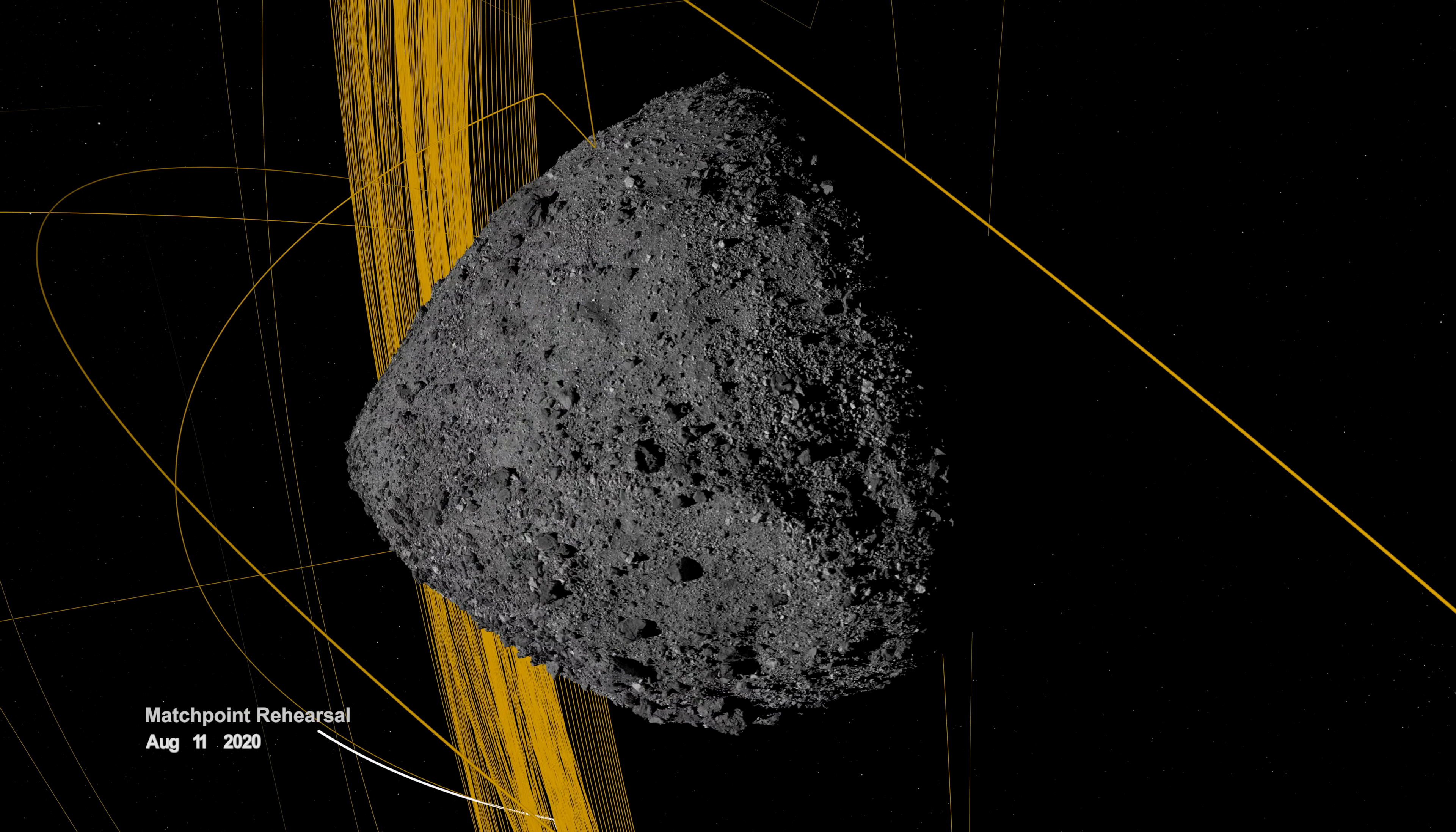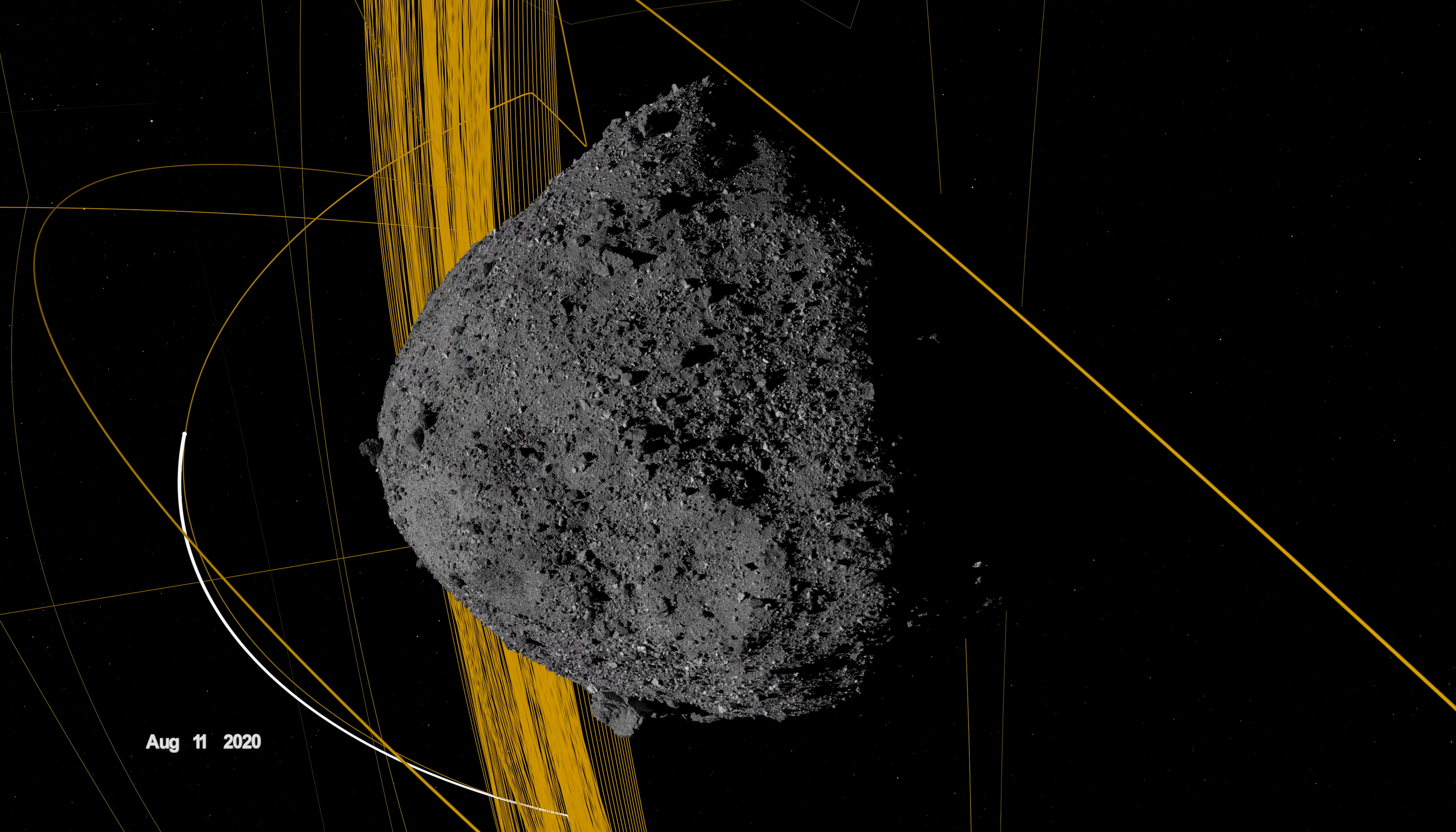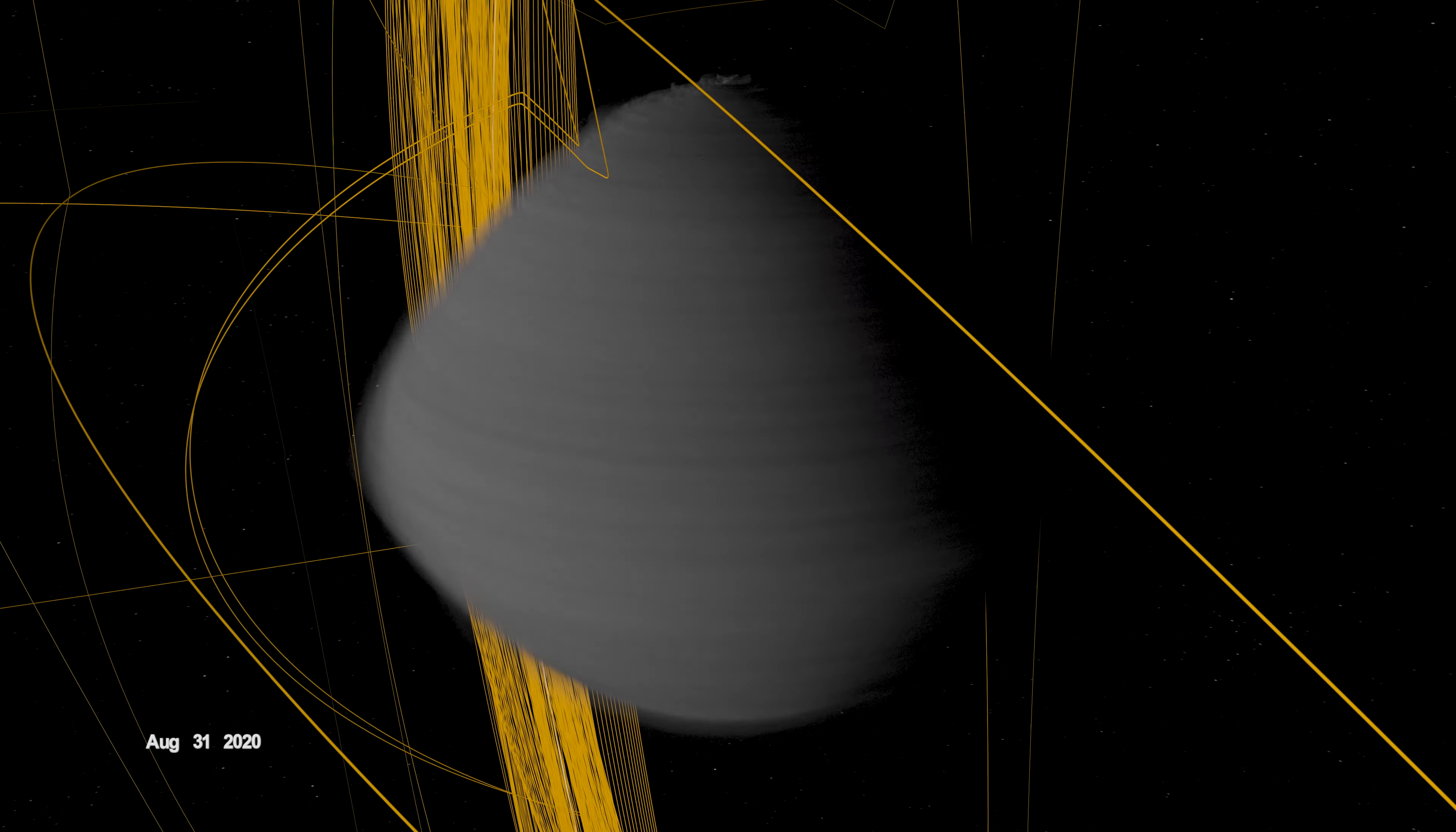On August 11th, OSIRIS-REx departed its home orbit and made a four-hour traverse to Bennu's northern hemisphere, retracing its earlier path. After performing the checkpoint engine burn to begin its descent, it made a second engine burn called matchpoint to match Bennu's rotation before backing away at an altitude of approximately 40 meters.